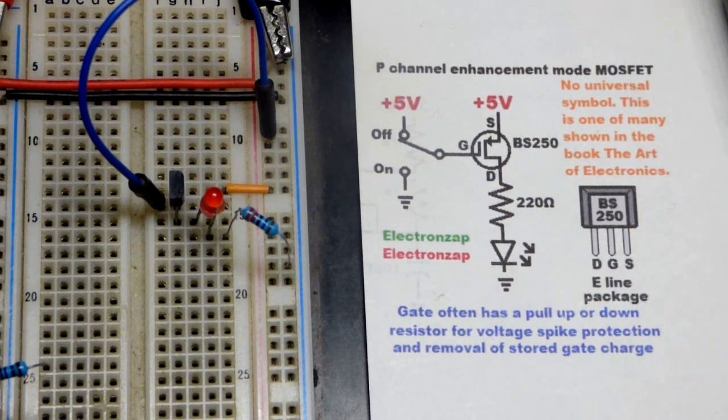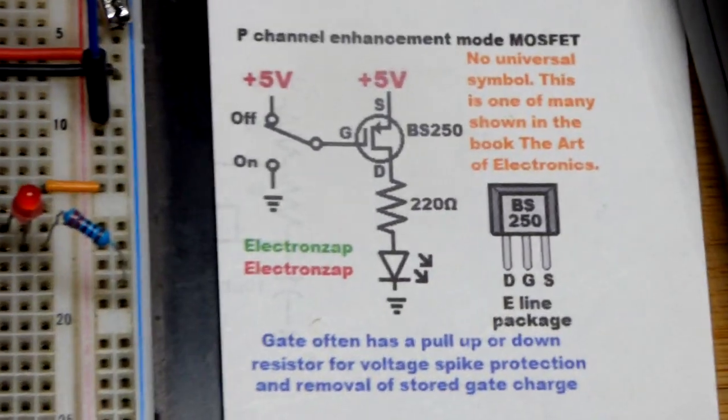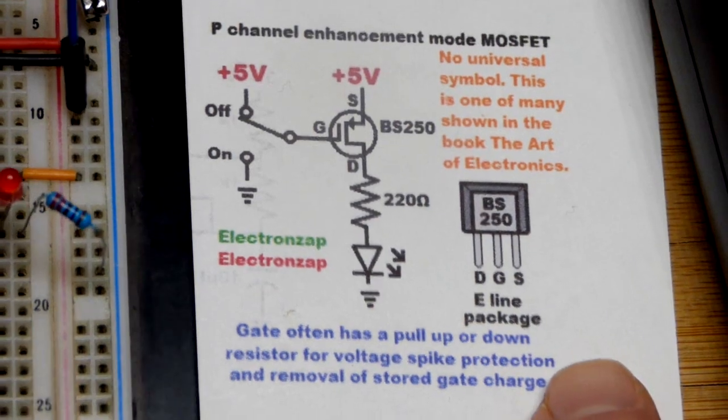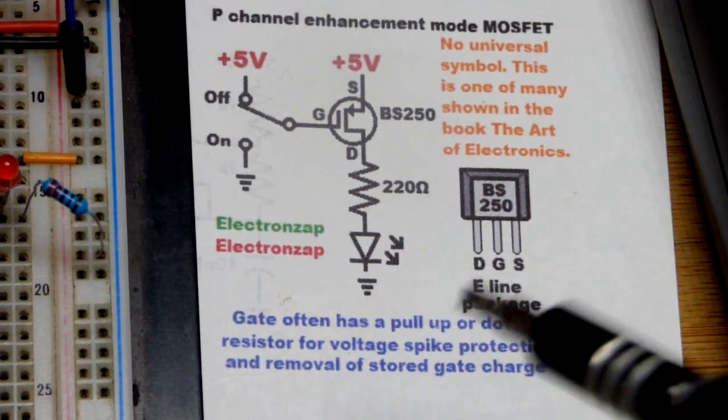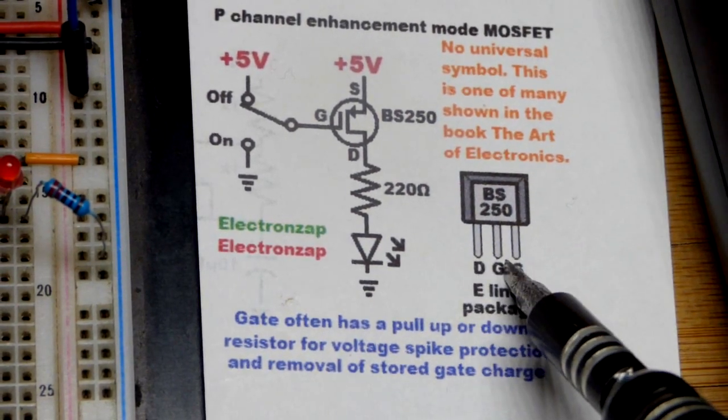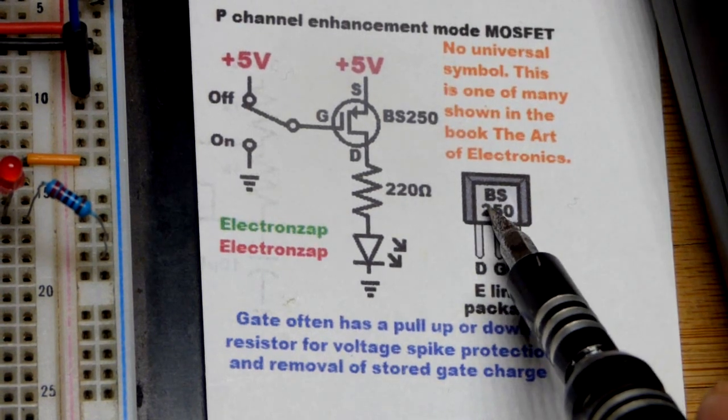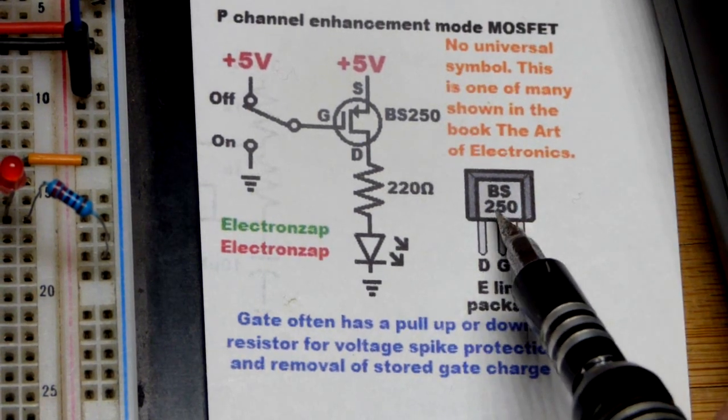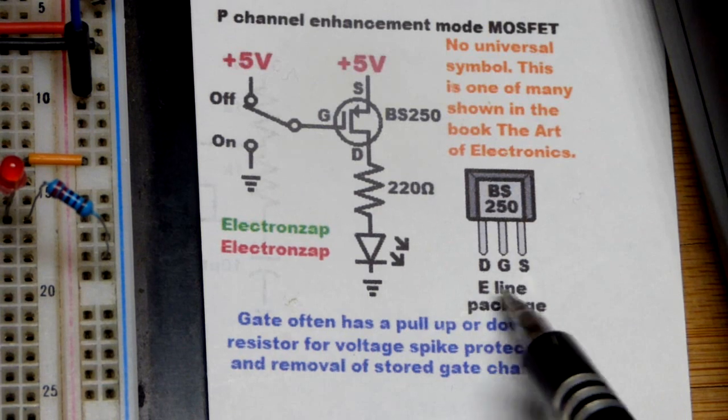I'm using the BS250, by the way, and here is the pin layout. So you can see BS250. We have the drain, the gate, and the source. The component that I'm using there, this is called E-line package. Good, I did write it down there.